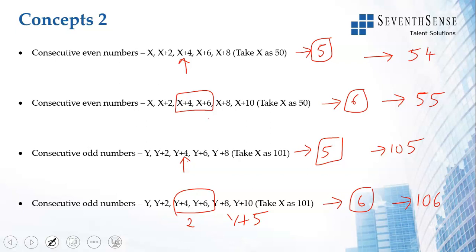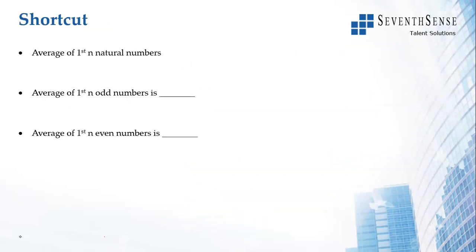To summarize: for consecutive numbers — whether plain consecutive, consecutive odd, or consecutive even — the average is the middle number when the count is odd, and the average of the middle two numbers when the count is even.